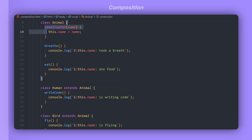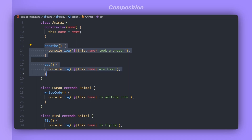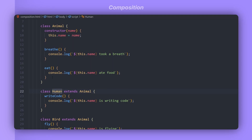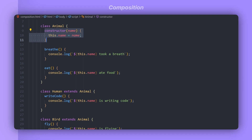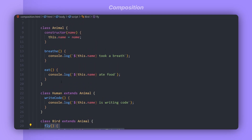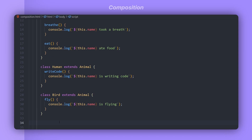Inheritance comes with restrictions. Let's look at what cannot be done with inheritance and how the same can be implemented with composition. Here I have already created a class named Animal. This class has a constructor that takes in a name, and the animal can also breathe and eat. I also have a Human class that extends the Animal class, so the human can eat, breathe, and have a name. On top of that, the human can write code. I have another class, Bird, that extends Animal and the bird can fly.